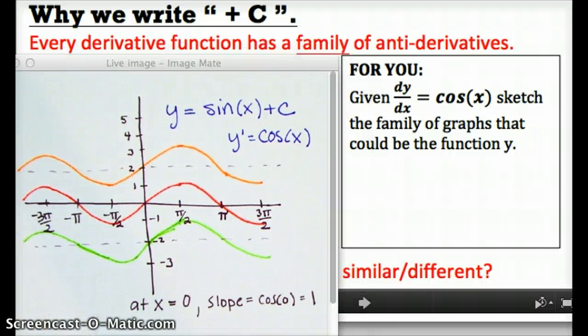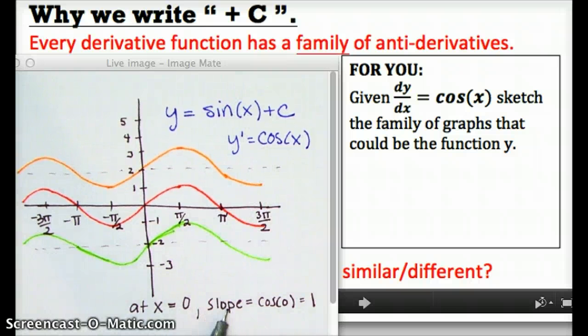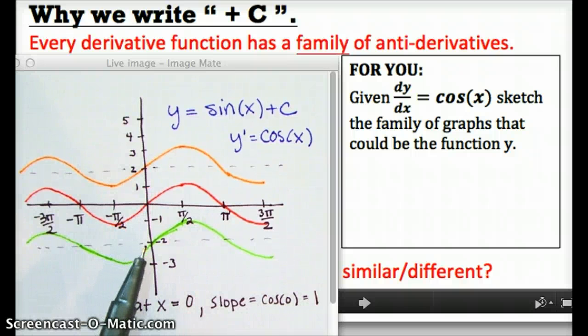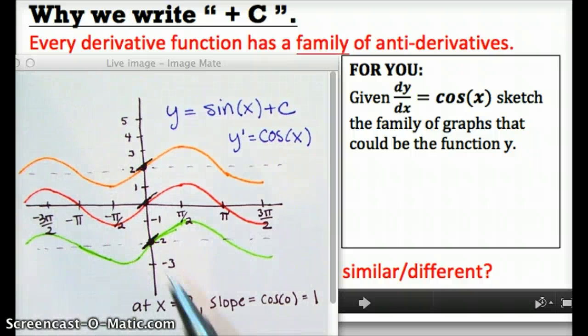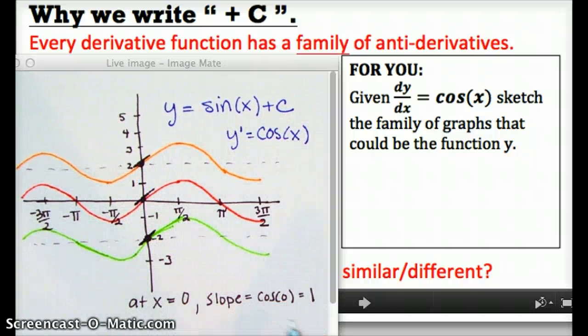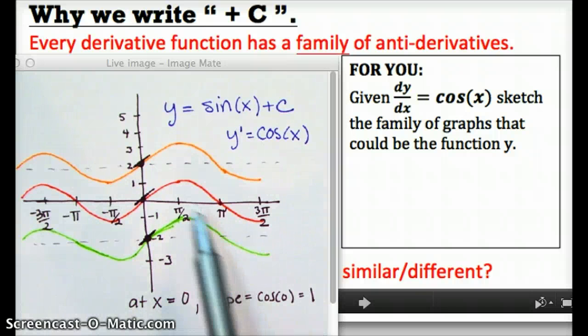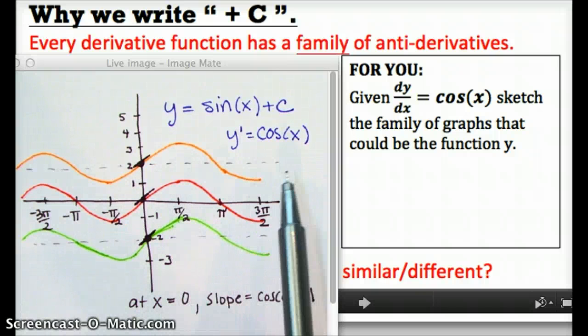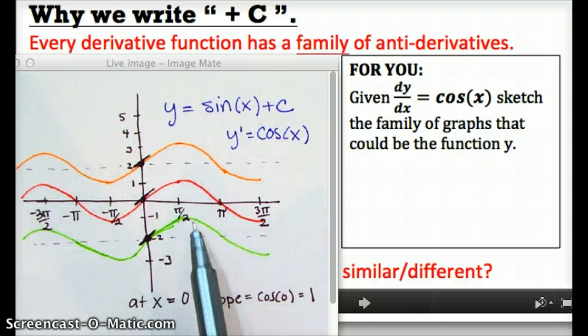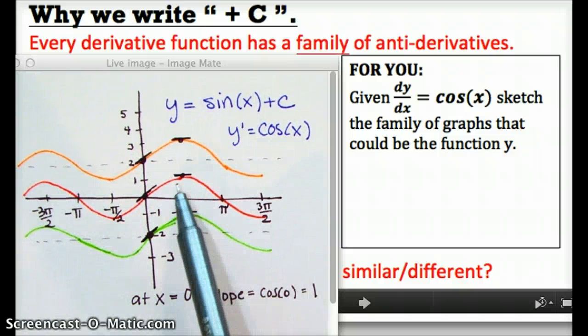For example, at x equals 0, if the derivative is cosine of x, then the slope of our original function has to be cosine of 0, which is just 1. And look at the graph. We can see that that's true. I can sketch little tangent lines, which all have x value 0 and slope 1. I could do the same thing at pi over 2. At pi over 2, cosine of pi over 2 is 0, so the slope of all these functions is also 0.